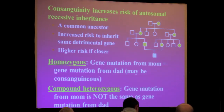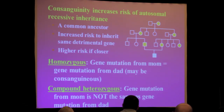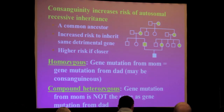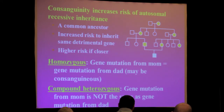There are some situations where you can have increased risk — one is consanguinity. If two parents are related, there is a much higher risk of having a recessive disorder, because there is a higher risk that they're both carrying the gene. That usually relates to a common ancestor, and the closer the parents are — first cousins versus third cousins — the higher the risk. Often that results in what we call a homozygous mutation, where the gene mutation from mom is the same as from dad. But there's also the possibility of a compound heterozygous mutation, where the gene mutation from mom is different but still in the same gene.